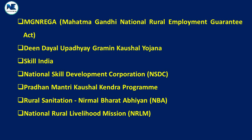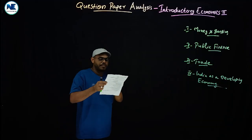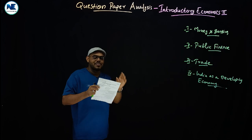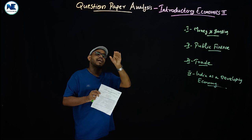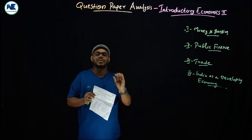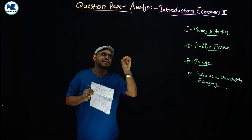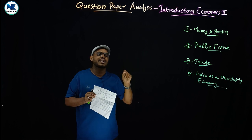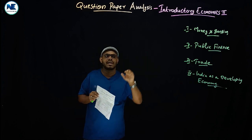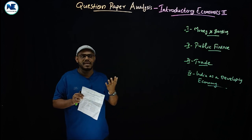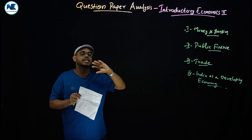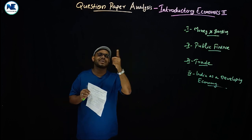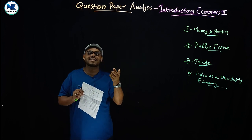The eighteenth question: what are the terms of reference of the 15th Finance Commission that were opposed by Kerala? This is a good and important question. Kerala opposed certain provisions. Focus on the Finance Commission under Article 280 of the Constitution. The current body is the 15th Finance Commission. Study its recommendations as well as those of the 14th Finance Commission. This question is also related to the Kerala economy, so you should update your information accordingly.